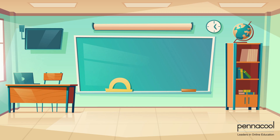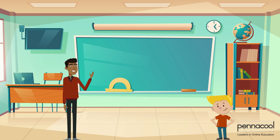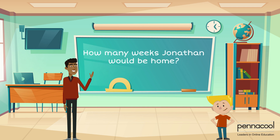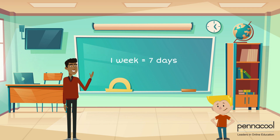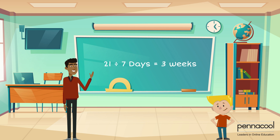Let's look at one last example. Jonathan's teacher tells him that school will be closed for vacation for a total of 21 days for school break. Can you calculate how many weeks Jonathan would be at home for? Well, if one week consists of seven days, then how many weeks is 21 days? In this case, we have to divide. 21 divided by seven days gives us three weeks. Did you get that as well? Great job!